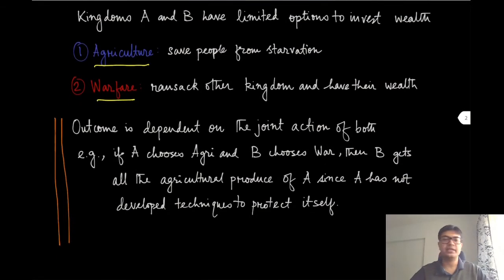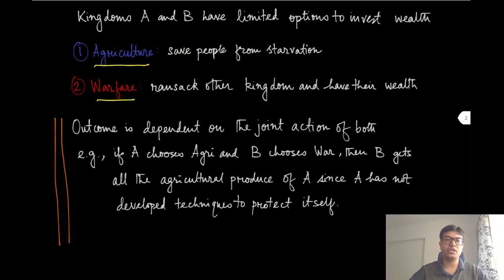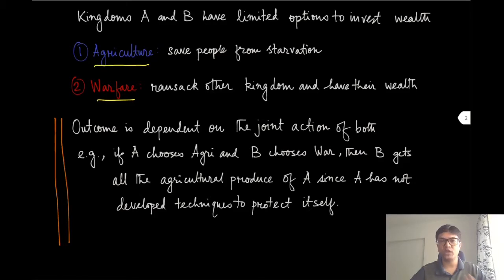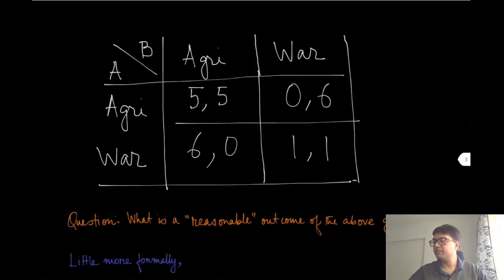If they invest in warfare, they are capable of defending themselves by raising a powerful army, and they can also attack the other kingdom to ransack their produce, land, and wealth. An important point here is that it is not sufficient to conclude what will happen based solely on your own action. If you are one of these kingdoms investing in agriculture, you cannot be sure of your payoff because you do not know what the other kingdom is going to do. If they invest in warfare, they might attack your kingdom and you will have no defense, losing all your agricultural produce and land. The outcome depends not only on one player's action but on the action profile — the actions picked by both agents.